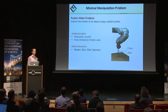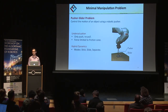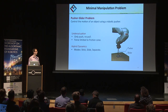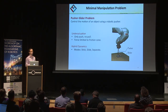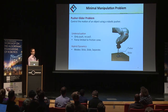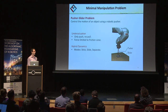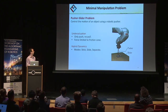We searched for a minimal manipulation task that would encapsulate both of these challenges. To us, that's the pusher-slider system, where the goal is to push a sliding object using a single frictional contact point, referred to as the gripper. This is an underactuated system — you can only push, not pull, and forces are limited to the friction cone. It also exhibits hybrid dynamics: the pusher can either stick, slide, or separate relative to the object.